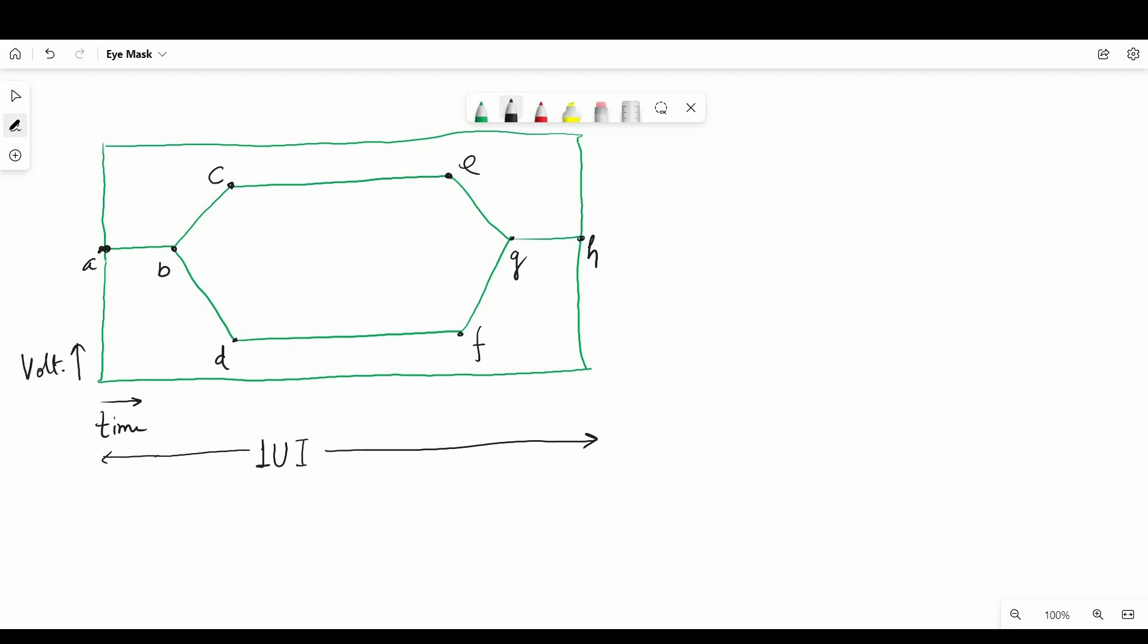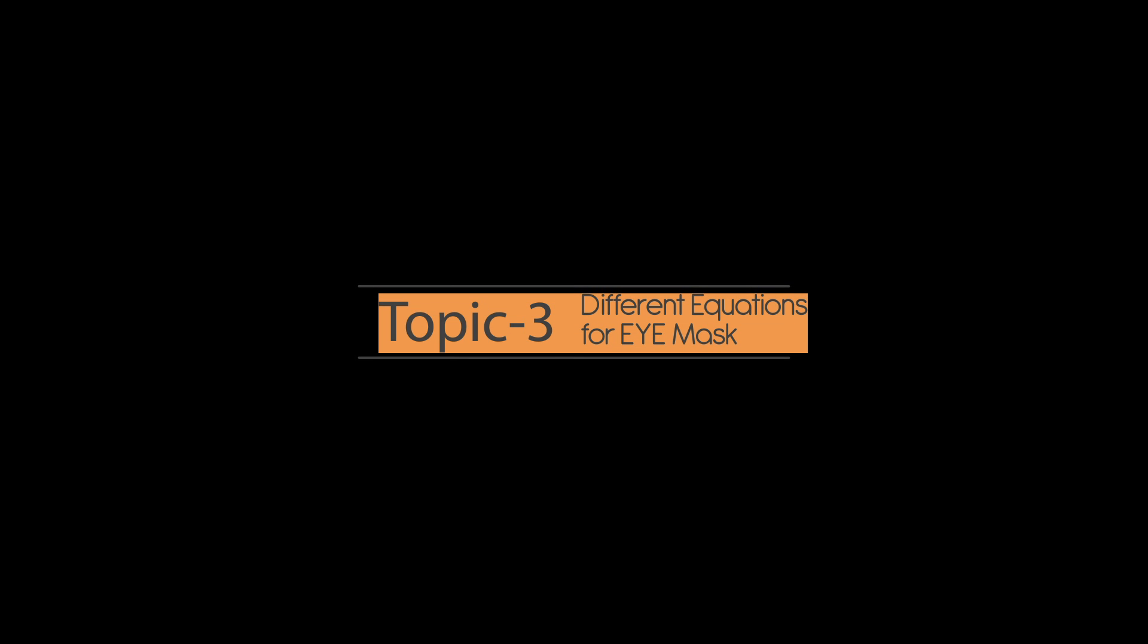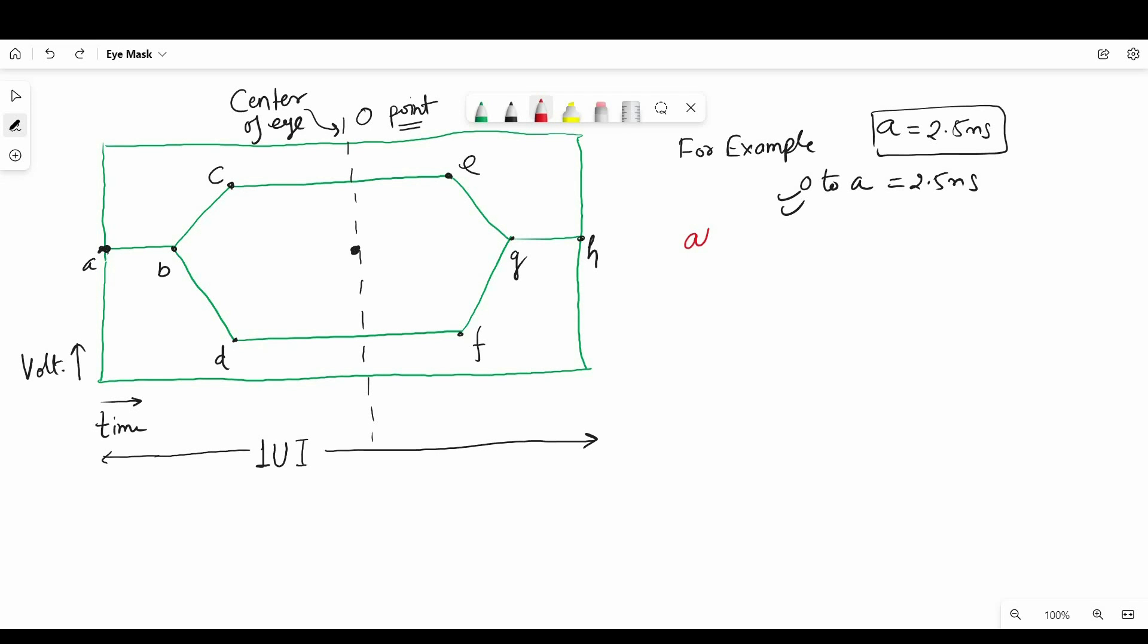Alright, so let me explain these measurements to you in more detail then we will go for the demonstration part on Security SI Viewer. First point that we should remember during calculation or noting down values from manufacturer's datasheet is that all measurements apply on eye mask are with respect to center of eye. For example, if A is equal to 2.5 nanoseconds, then this point will be 2.5 nanoseconds away from the center of eye mask as you can see on the screen. Now we are good to go for all the formulas and measurements.